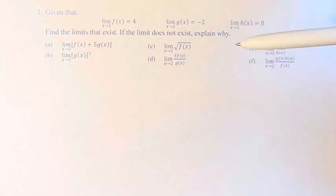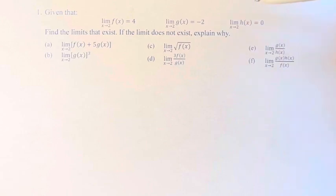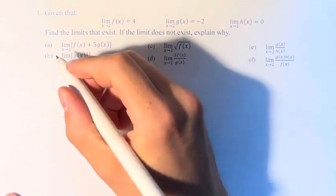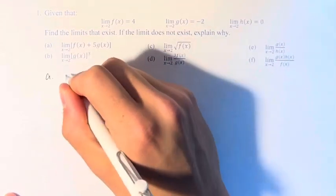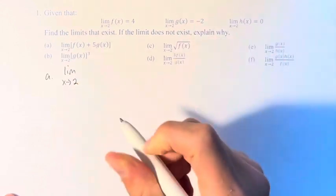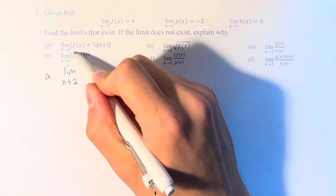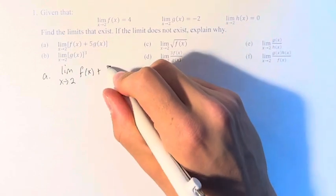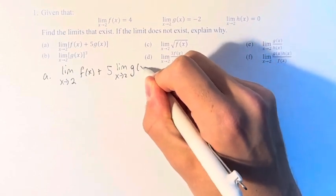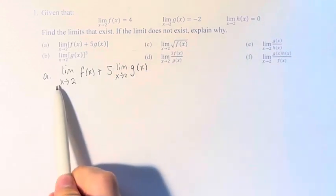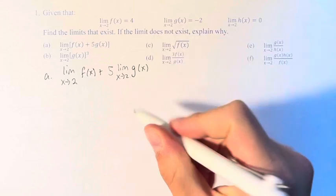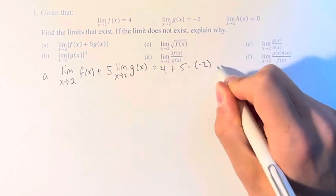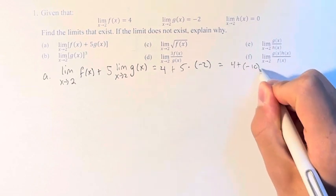The best part of these limits is that you can directly plug in the values that these functions approach to get your limit. So right here in a, the limit as x approaches 2 of this whole thing is equal to the limit as x approaches 2 of f of x, plus 5 times the limit as x approaches 2 of g of x. You can separate out these things, and now we know that this is equal to 4, plus 5 times negative 2, so this is equal to 4 plus negative 10, which is equal to negative 6.